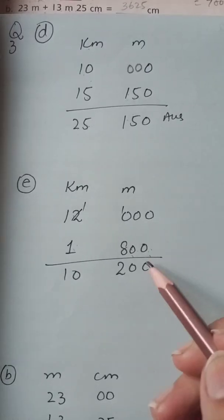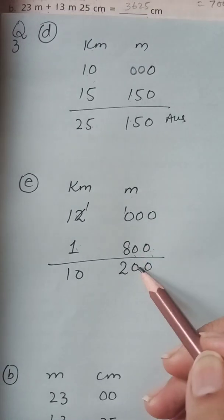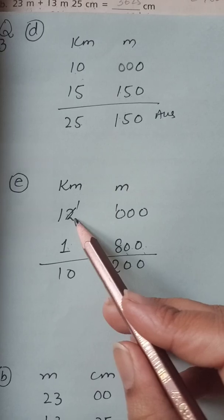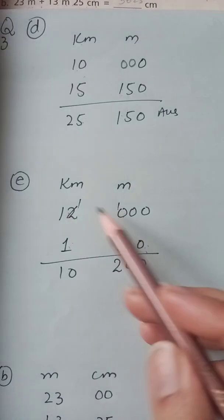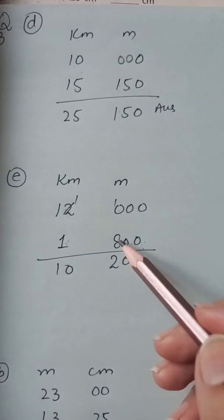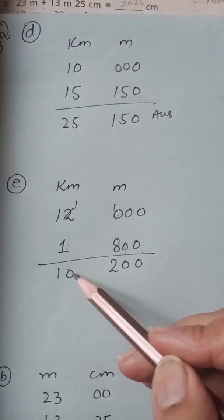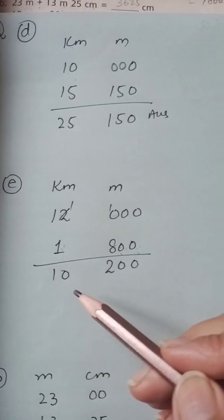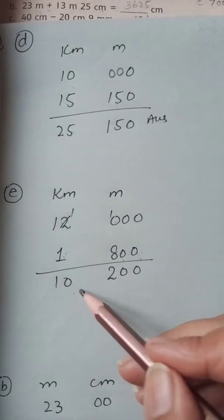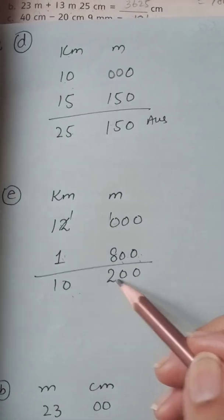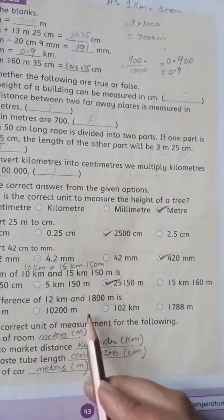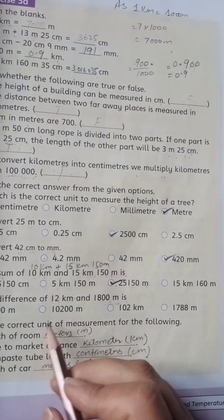Completing the subtraction, 11 minus 1 in the kilometers column gives 10 kilometers, and 200 meters in the meters column. So the answer is 10 kilometers and 200 meters. This is the correct option.